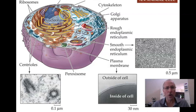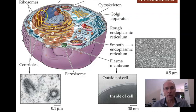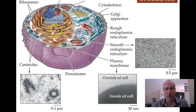These membranes here are all contiguous, all continuous, with the nuclear membrane. They are all connected to it. You can see the bridge here, and all these black dots on it — the black dots are ribosomes attached to it. So this is the rough endoplasmic reticulum. You should recognize that from earlier in the class.